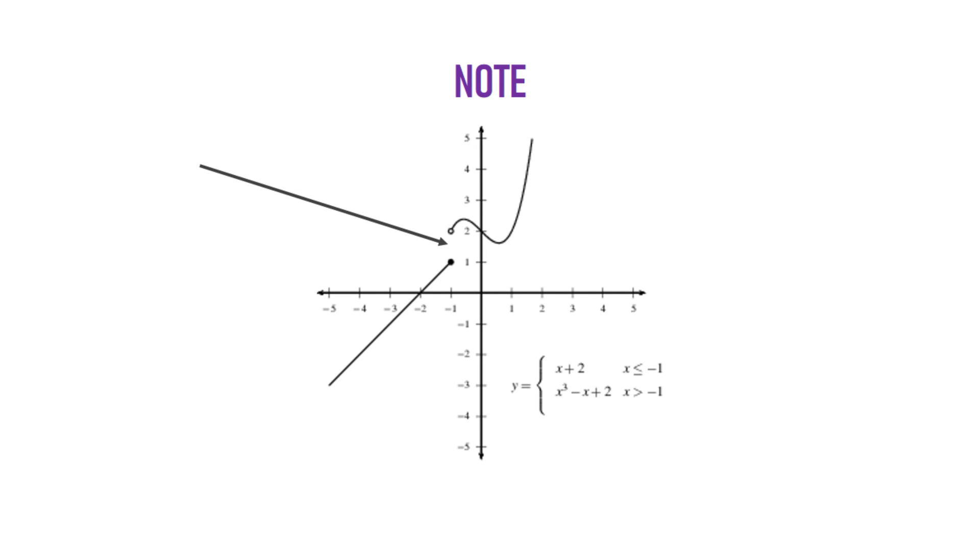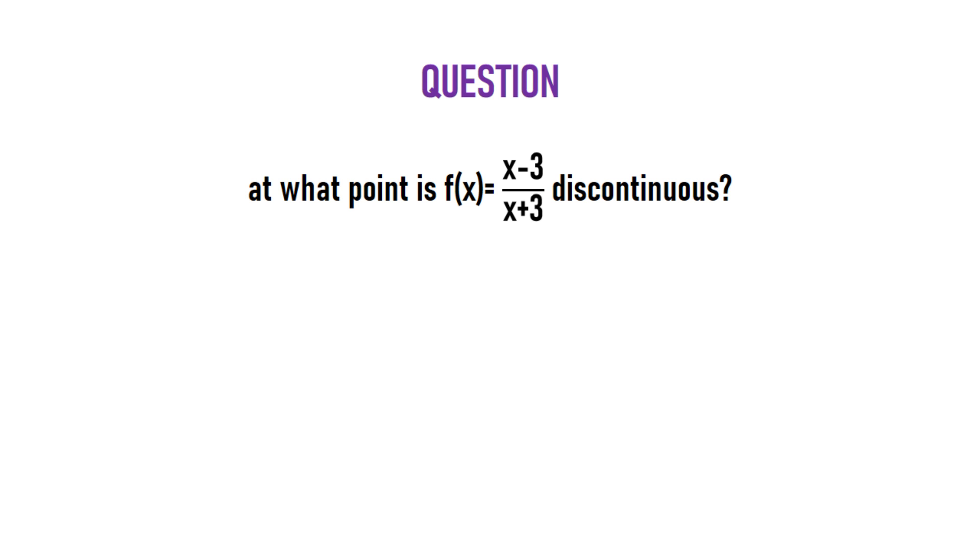Let's try a typical exam question. At what point is f(x) = (x-3)/(x+3) discontinuous? It's the point where the denominator is zero - that's -3. So the answer is at the point where x = -3.